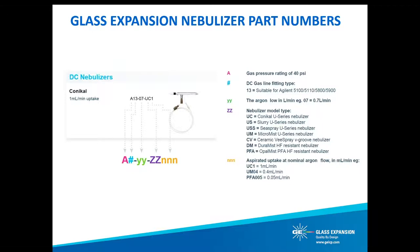Each of our nebulizer models is also designed for a specific liquid flow rate or range of liquid flow rates. You do not want to choose a low uptake nebulizer model if you're running your ICP at, say, 2 mils per minute, as it will degrade performance and lifetime. The liquid flow rate is indicated by the NNN in our part number nomenclature. It's also important to note that all of these uptake rates are the nominal self-aspiration rate. You can always starve a nebulizer with your peristaltic pump, but make sure you're selecting the nebulizer model for at least close to the highest uptake rate you'll be using in your ICP method.